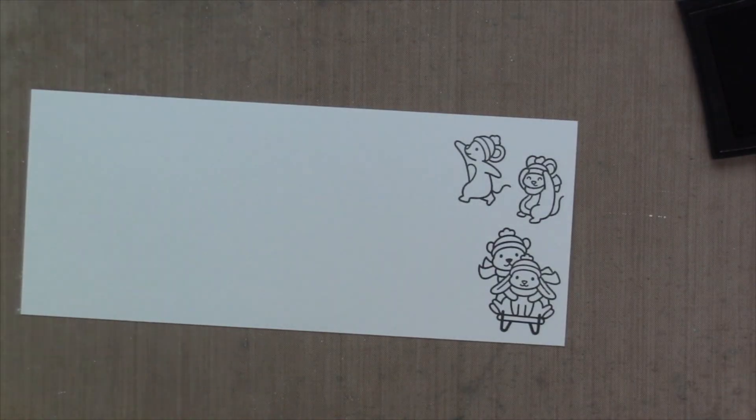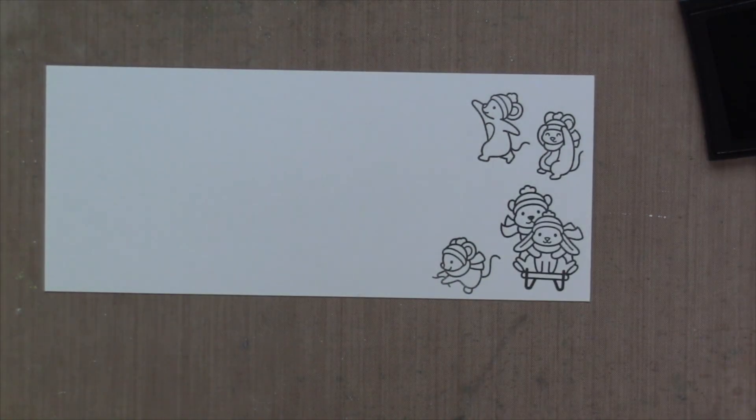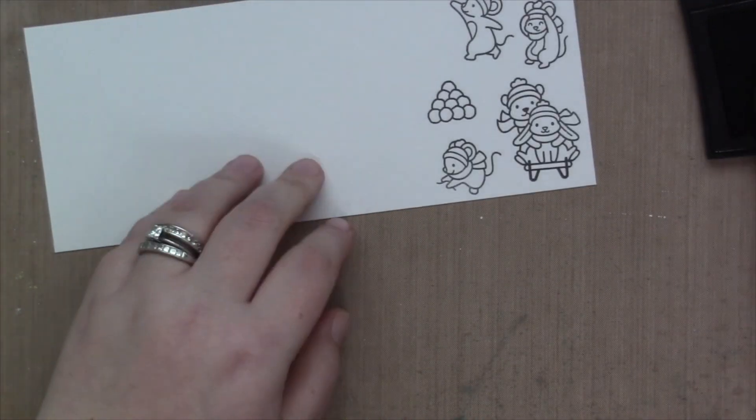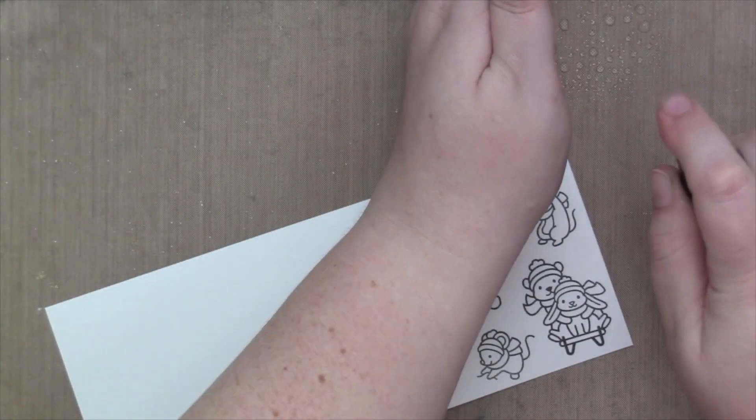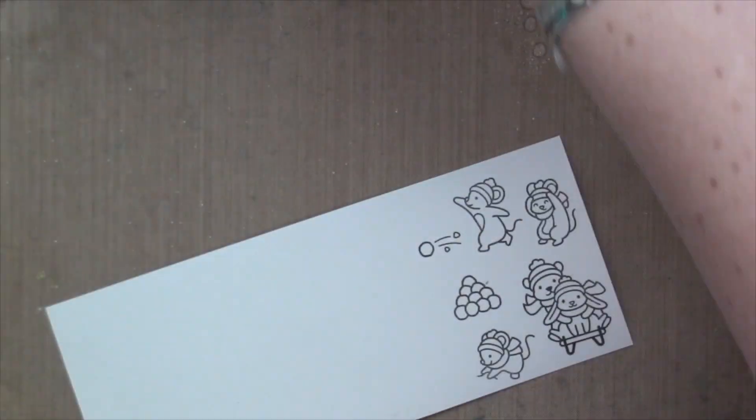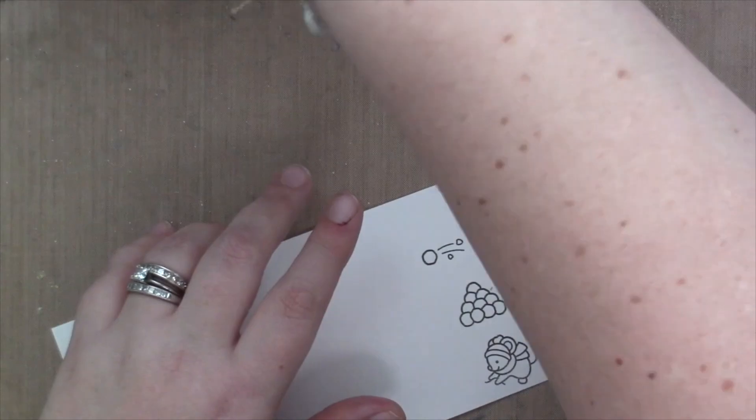As usual, I'm going to start my card by stamping all of my images with black ink onto some Strathmore Mixed Media Vellum Surface Paper and then I heat set it to dry.